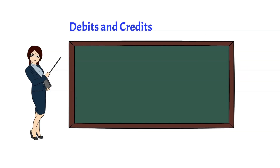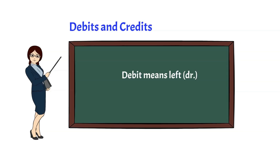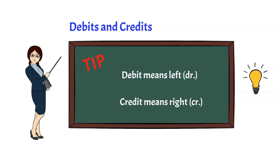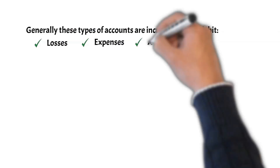After reviewing these questions, let's go back to debits and credits. After you have identified two or more accounts involved in a business transaction, you must debit at least one account and credit at least one account. To debit an account means to enter an amount on the left side of the account, and the abbreviation for debit is DR. To credit an account means to enter an amount on the right side of an account, and the abbreviation for credit is CR. Here's a tip: debit means left, and credit means right. Generally, these types of accounts are increased with a debit: losses, expenses, assets, and dividends.